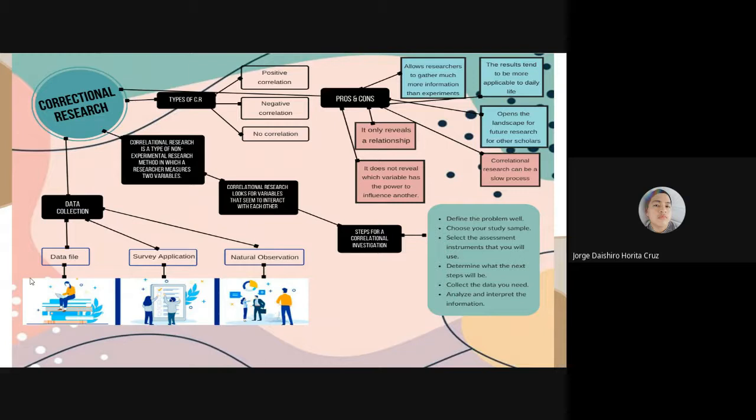The steps are the following: define what problem you are going to investigate, choose your study sample according to the needs of your research project, select the evaluation instruments that you will use, be it online surveys, field observation, or archival search, determine what will be the steps to follow to correctly implement the process, collect the data you need, and finally analyze and interpret the information to make the right decisions.